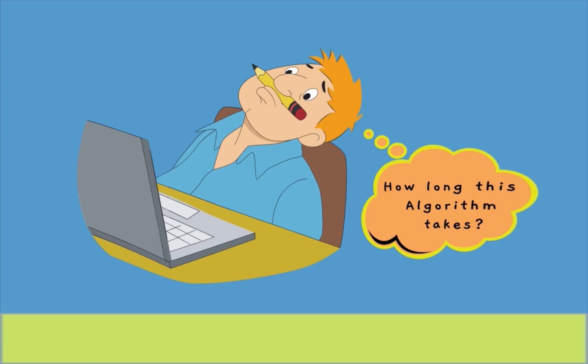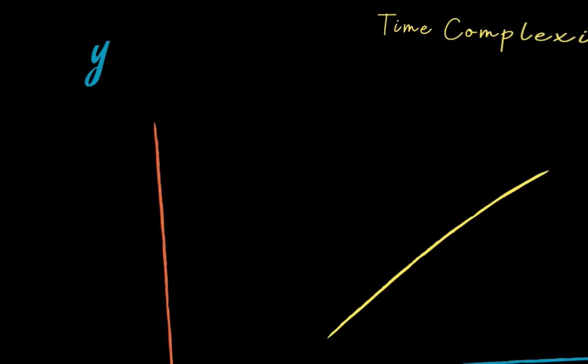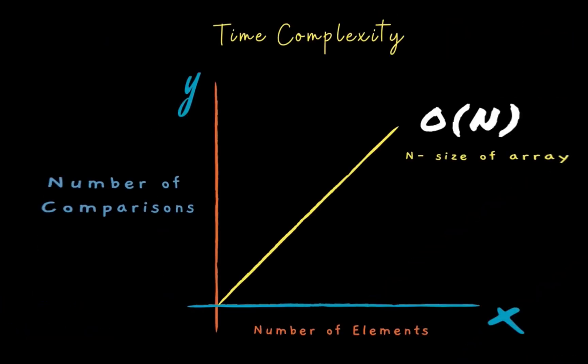You may wonder how long this algorithm takes. The time complexity is O(n), where n is the size of the array. On the y-axis we show the number of comparisons, and on the x-axis the number of elements — you can see it as a straight line. The space complexity is constant for this algorithm. Thank you for watching.